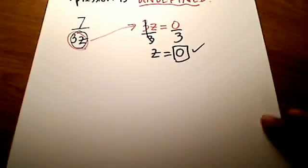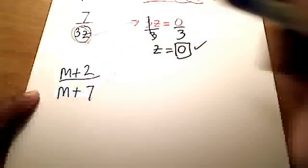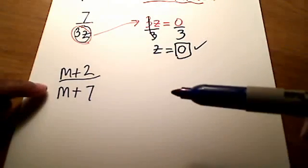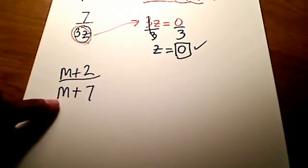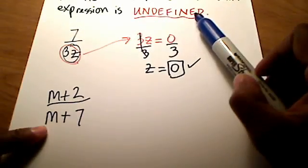How about this one? How about if I showed you m plus 2 over m plus 7, something like that, and I said, okay, what about this expression? What value would m have to be so that my expression, my fraction, is undefined?